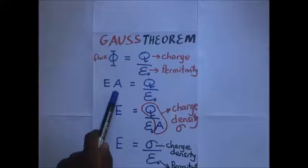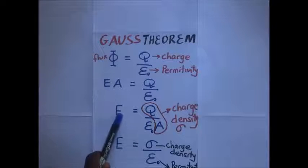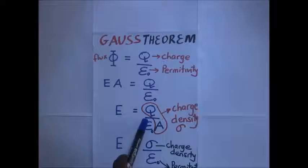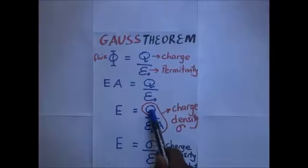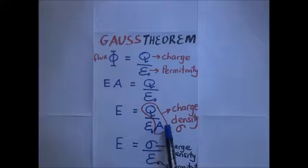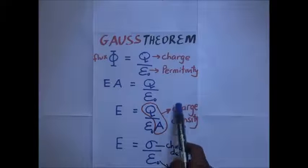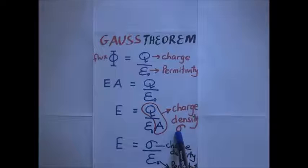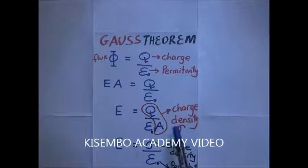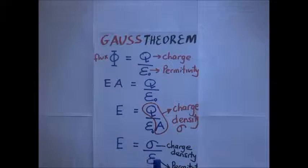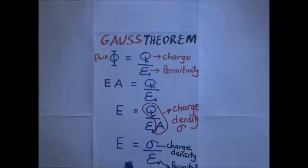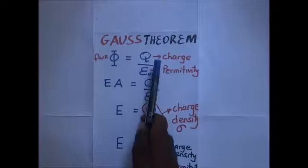Dividing area on both sides so that we have the intensity on one side, we know that the charge per unit area is what we call charge density. So in simple terms, this intensity can also be equal to charge density divided by permittivity. This expression, where intensity equals charge density divided by permittivity, is derived from Gauss's theorem.